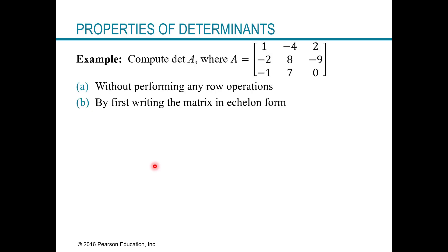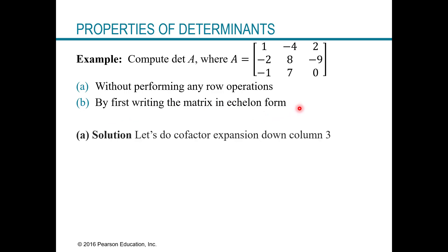So let's try this out with an example. We're going to compute the determinant of this three by three matrix two ways: without performing any row operations using cofactor expansion, and then by writing the matrix in echelon form using row operations and the theorem we just looked at. We'll pick column three because it has a zero in it — a good choice would also have been row three, since it has a zero. It just makes us do a little bit less work.